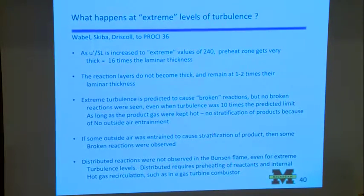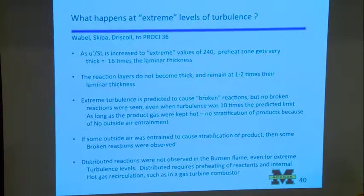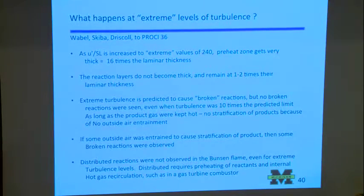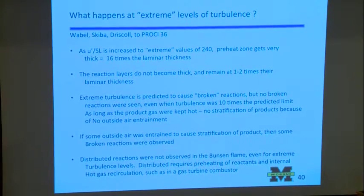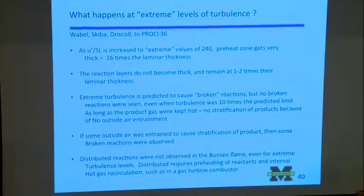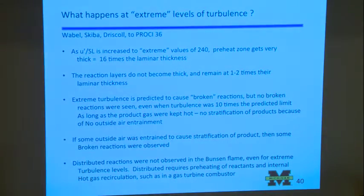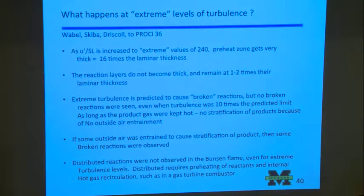We created like a bluff body type geometry where we have a cone shape and then a flat base to it and things recirculate. And so this allows more cold air to mix in with the hot products and we get all sorts of distributed and broken zones. This is not what we get with a Bunsen flame that has hot gases all around it. So this might lead us to an idea of why we sometimes see broken zones and it may not have anything to do with the amount of turbulence. It may have to do with stratification. So a conclusion that we'll be talking about in Seoul is that even if you go to extreme turbulence level, the preheat zone gets thick, the reaction zones don't get thick, but no broken reactions are seen as long as we have hot gases on the product side. But if some outside air is entrained into the products, we see broken reactions. Distributed reactions were not observed but only little globs of partially distributed reactions.